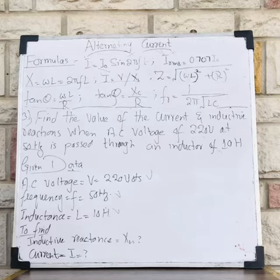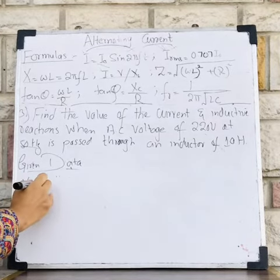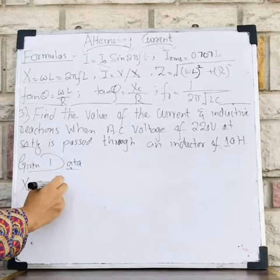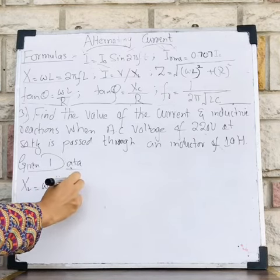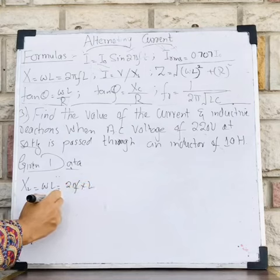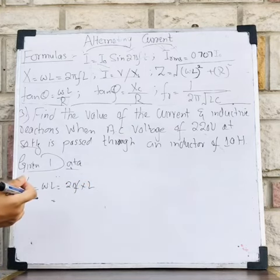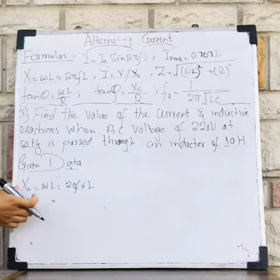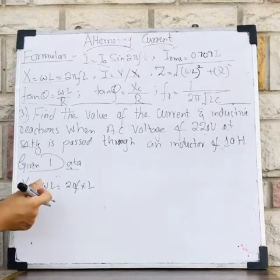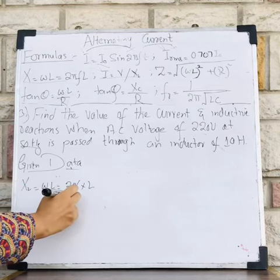First part: XL is equal to ωL, and I know that ω is equal to 2πf multiplied with L. Now I have frequency as well as L which is inductance, and I can find inductive reactance. So let's put values: 2 multiply with π.